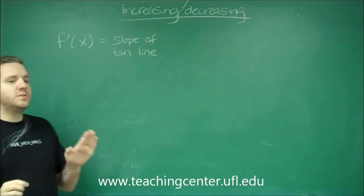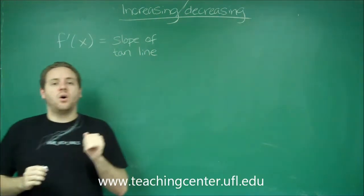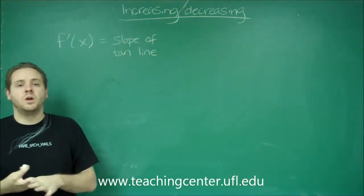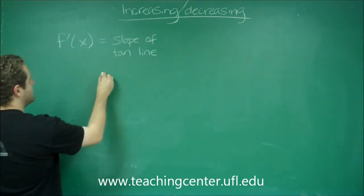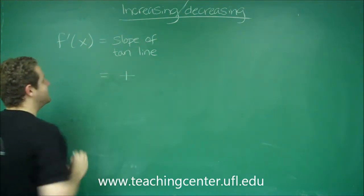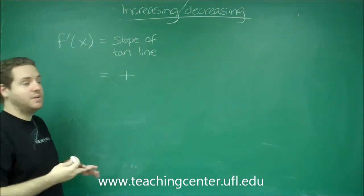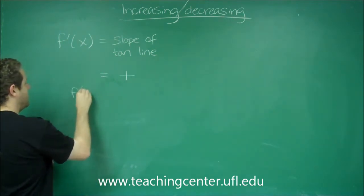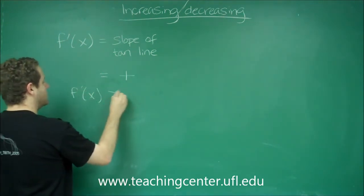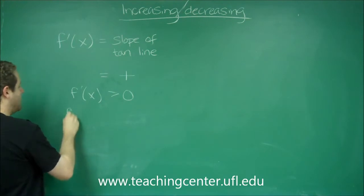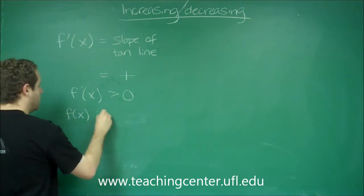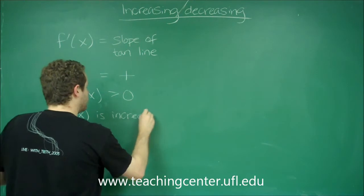So for a function to be increasing, its tangent line always has to have a positive slope. That tells you that this first derivative, as long as it's positive in any way, in other words f prime of x is greater than zero, that means f of x is increasing.